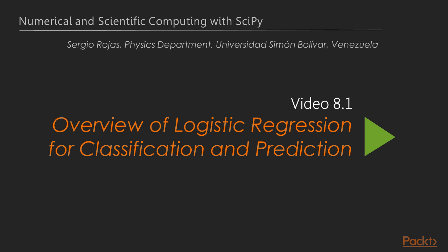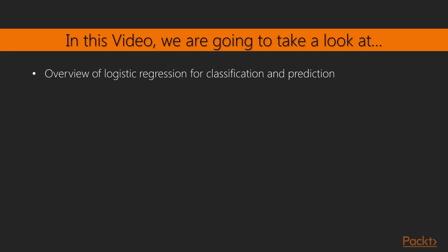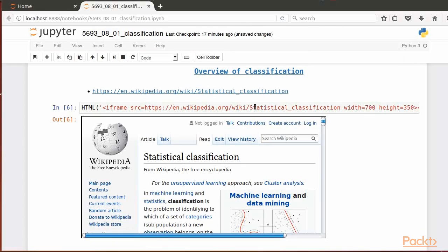Moving on to the first video of this section, with an overview of logistic regression for classification and prediction. We're going to cover an overview of classification and a theoretical digression about logistic regression for classification and prediction.